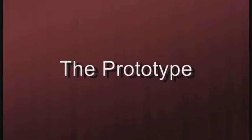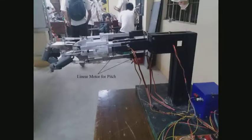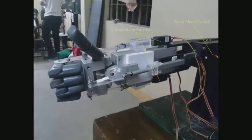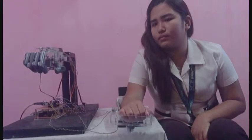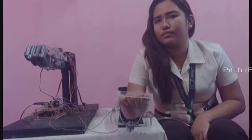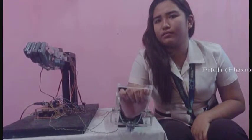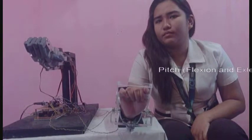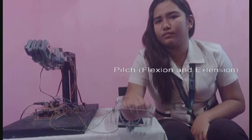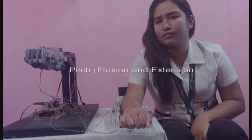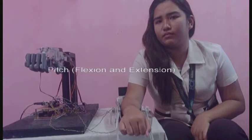The prototype is made up of a solid aluminum alloy to sustain the weight to be applied for lifting. The pitch and yaw movement of the robotic wrist is dependent on the movement of the linear motors, while the roll movement is provided by a servo motor. The movements of the robotic wrist are mimicked from a controller made up of potentiometers, serving as sensors for the movement of the human wrist.